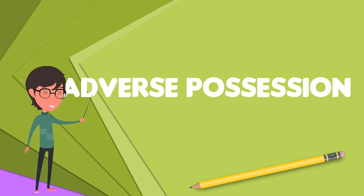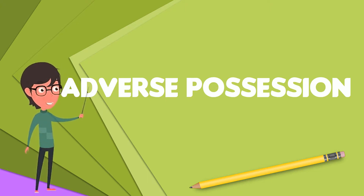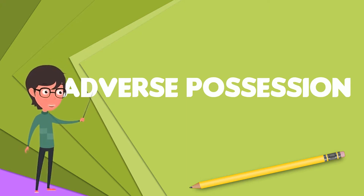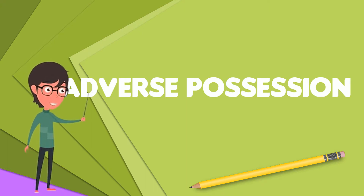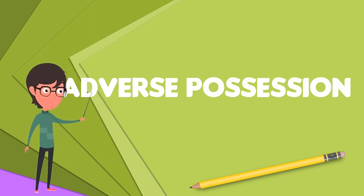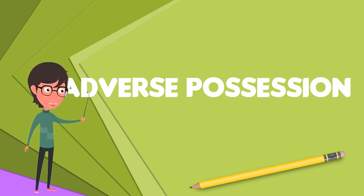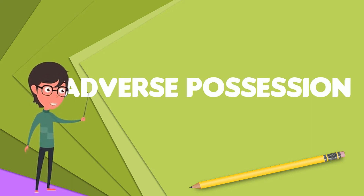In general, a property owner has the right to recover possession of their property from unauthorized possessors through legal action such as ejectment. However, in the English common law tradition, courts have long ruled that when someone occupies a piece of property without permission and the property's owner does not exercise their right to recover their property for a significant period of time, not only is the original owner prevented from exercising their right to exclude, but an entirely new title to the property springs up in the adverse possessor. In effect, the adverse possessor becomes the property's new owner.